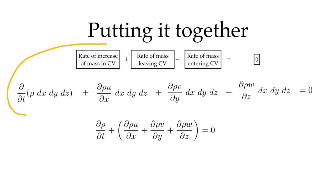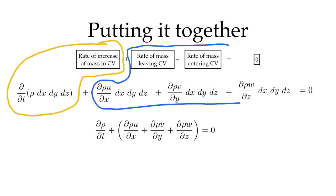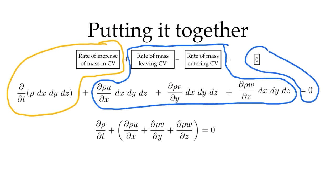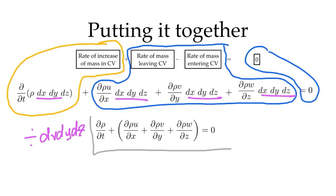Here's the term related to the changes inside the volume. The rate of change of mass leaving the CV minus the rate of change entering the CV is expressed as thus. Of course, it's all equal to zero. I can divide by the volume — I have the volume in every single term — so I can divide by dx dy dz, and I'm left with the full form of my conservation of mass equation in differential form.